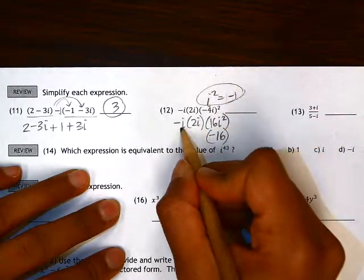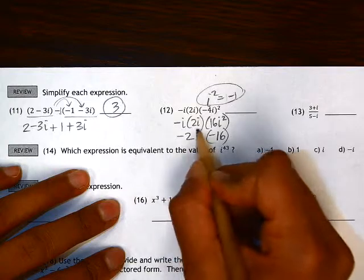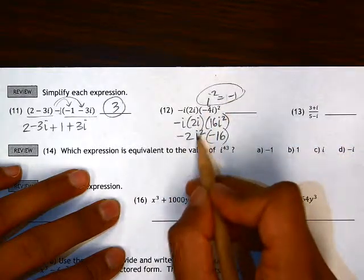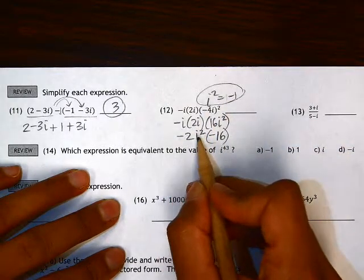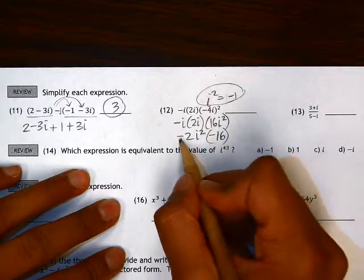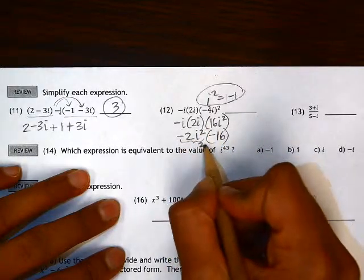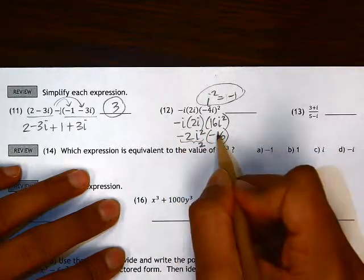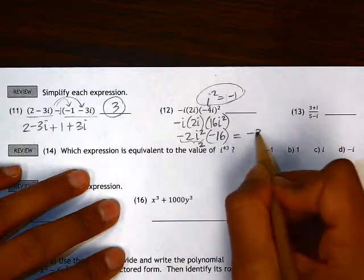2 times i times i is negative 2i squared. Again, here we have an i squared. So negative 2 times negative 1, that becomes positive 2. Positive 2 times negative 16 is negative 32.